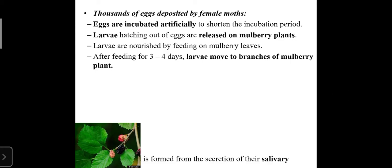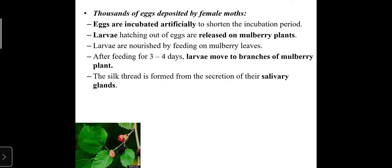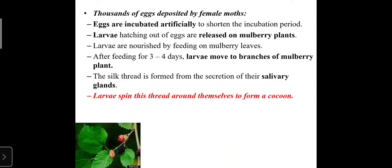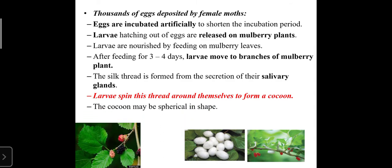After feeding for three to four days, the larvae move onto the branches of mulberry plants. On those branches, they form a structure from the secretion of their salivary glands. The salivary gland secretion is used to prepare silk thread.